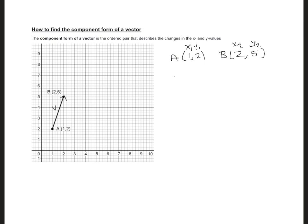To find the component form, the component form is written using this symbol here, so it's going to be x2 minus x1 and then y2 minus y1. And this is going to be 2 minus 1 comma 5 minus 2.